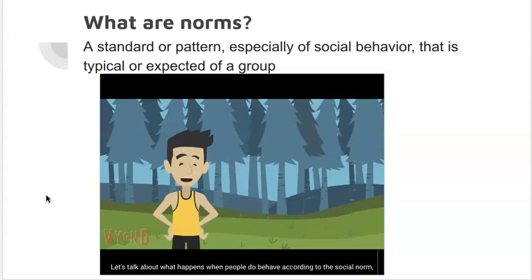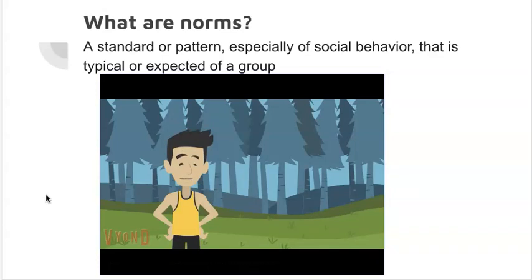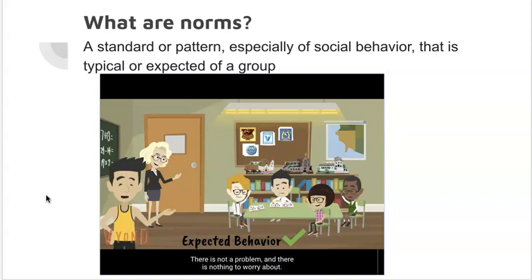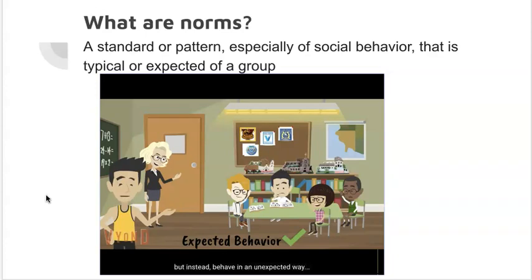Let's talk about what happens when people do behave according to the social norm in an expected way. When a person behaves in an expected way, the people around them are comfortable because everything is normal — there is not a problem and there is nothing to worry about. Now let's see what happens when people don't behave according to the social norm, but instead behave in an unexpected way.